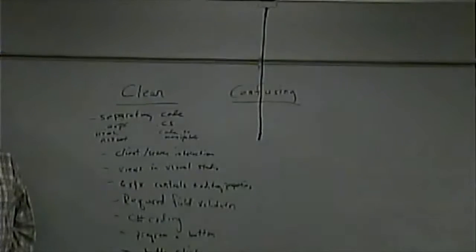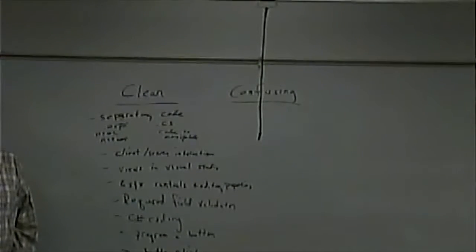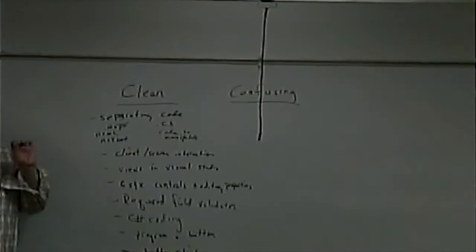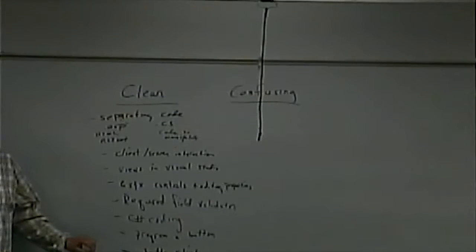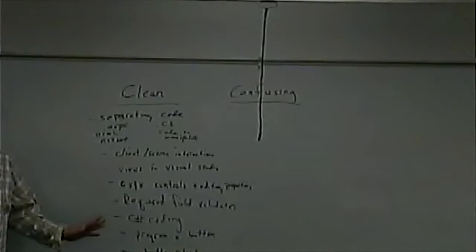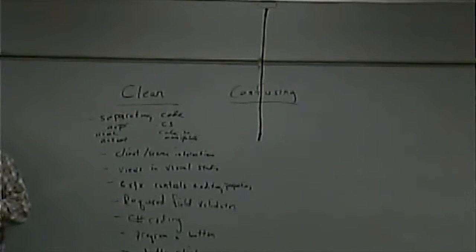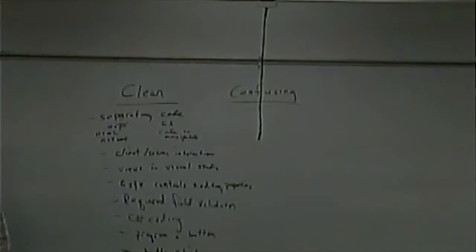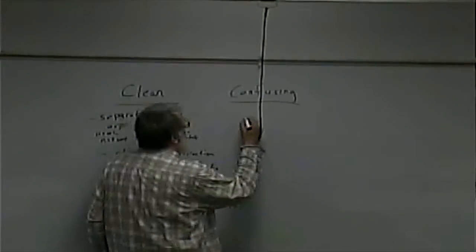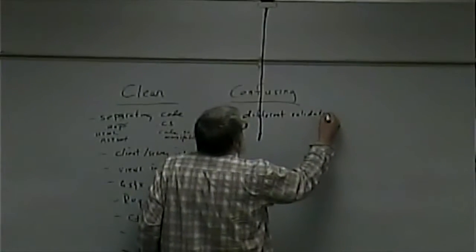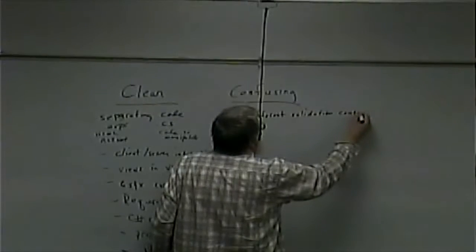Now here's the good one — something that you're confused about. If you don't give something you're confused about, that means you understand everything perfectly, which means I'm going to take it easy and you're going to finish the lecture — that's the possible penalty. Students respond: using the different validation controls, and the initial value of the drop-down.